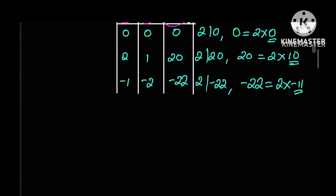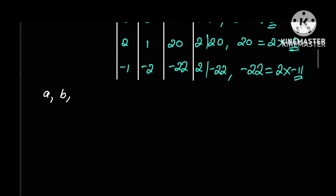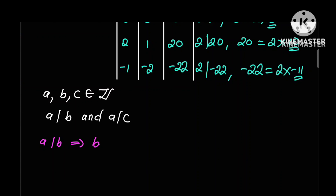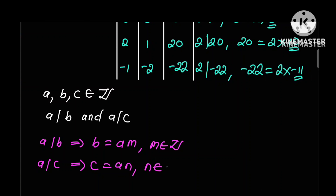We are told that a, b, and c are three integers such that a divides b and a also divides c. From the definition of divisibility, we know that if a divides b then b should be equal to a times m, where m is an integer, and if a divides c then c should be expressed as a times n, where n is also an integer. To prove that a divides any linear combination of b and c, we have to use these two hypotheses.